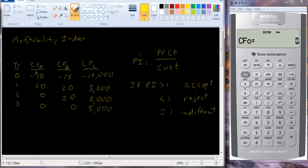Now you'll notice that this looks a little bit similar to net present value. Net present value, we took the present value of the cash flows and subtracted the cost. You were dividing by the cost. In net present value, we were looking for a positive number. And a positive number is the same as having a profitability index that's greater than one.